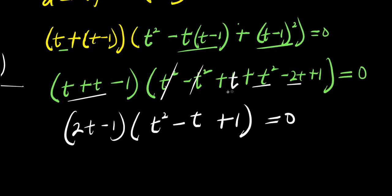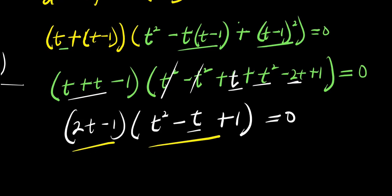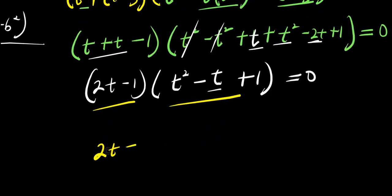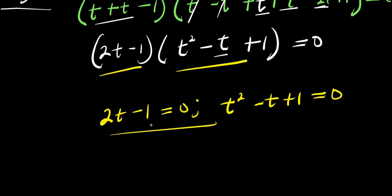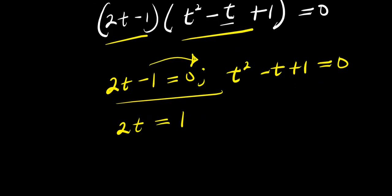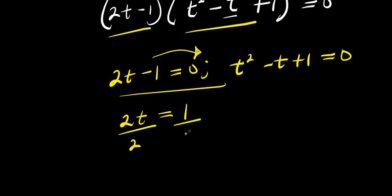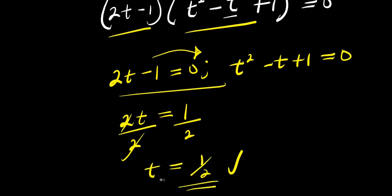We equate each factor to 0. From 2t minus 1 equals 0, we move the negative 1 over: 2t equals 1, then dividing by 2 gives t equals 1 over 2. This is our t₃, the first real solution.